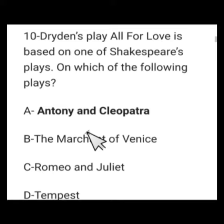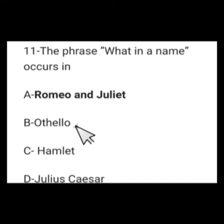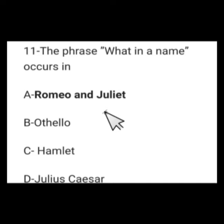Number 11: The phrase 'What's in a name?' occurs in which play? Options: Romeo and Juliet, Othello, Hamlet, or Julius Caesar. The complete lines are: 'What's in a name? That which we call a rose by any other name would smell as sweet.' This was said by Juliet, meaning it does not matter what family Romeo belongs to. This line is from Romeo and Juliet.